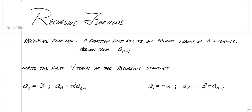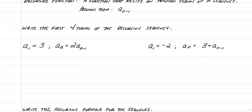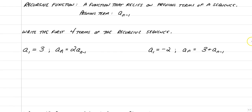We're going to write the first four terms of a recursive sequence. To do that, I recommend that you list a sub 1, a sub 2, a sub 3, and a sub 4.